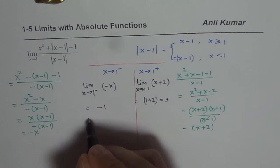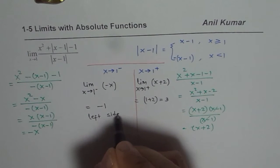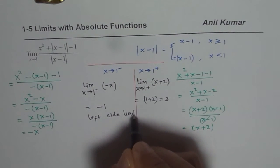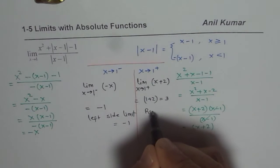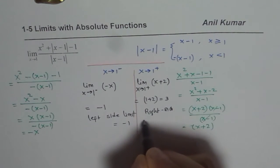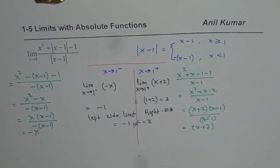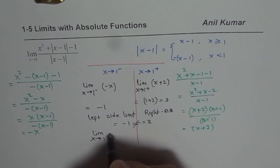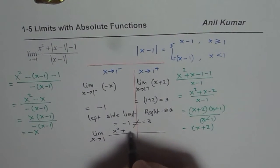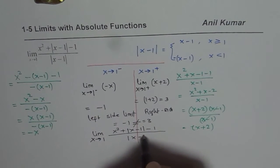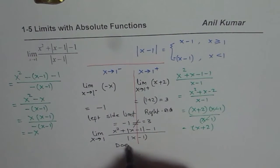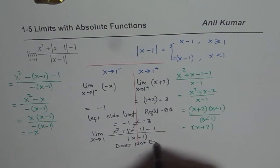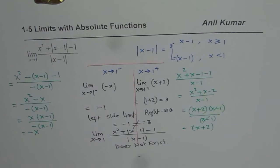Now clearly from here, my left side limit, what is the left side limit? Left side limit is equal to minus 1 and the right side is equal to 3. And they are not equal. Since left side limit is not equal to the right side limit, we say that the limit x approaches 1 for the whole function, which x square plus x minus 1 absolute value divided by absolute value of x minus 1 does not exist.